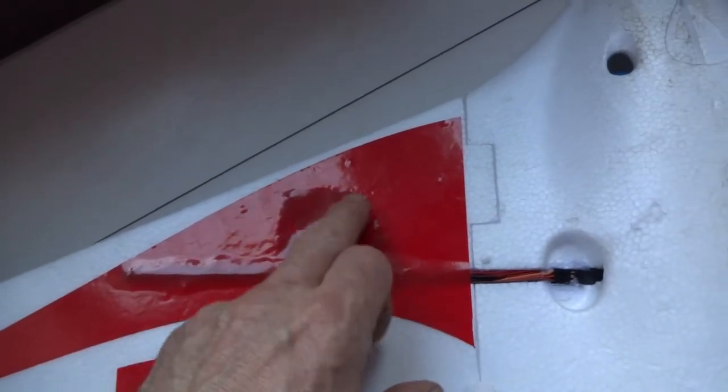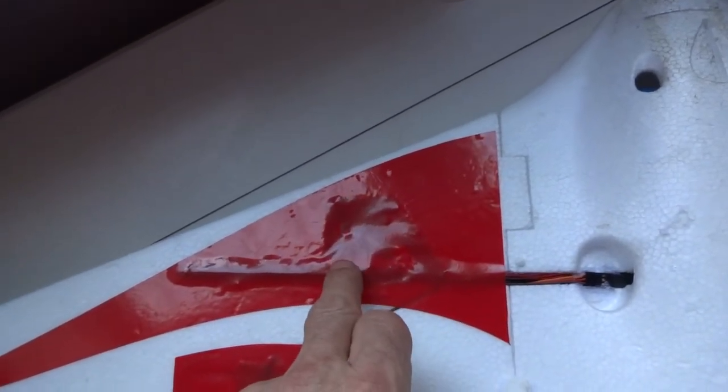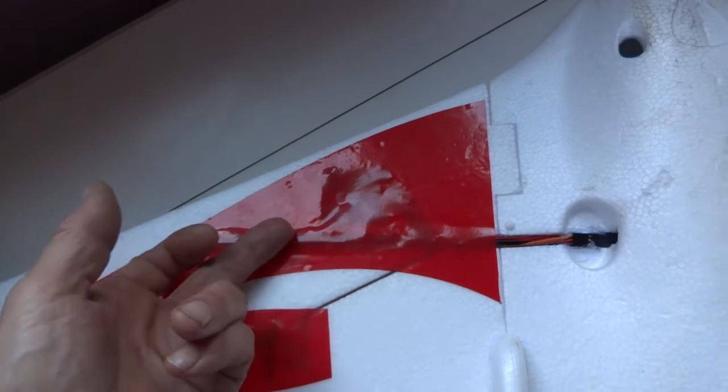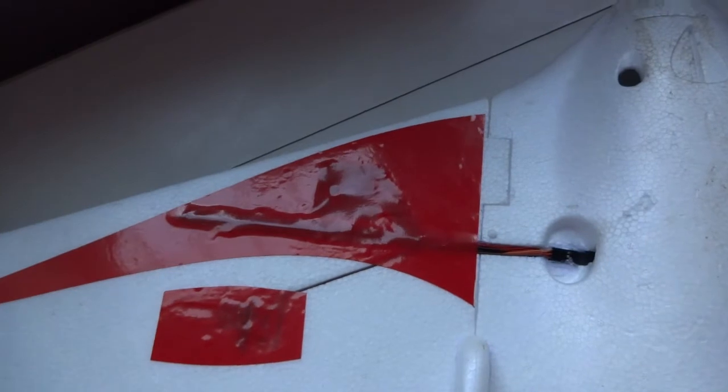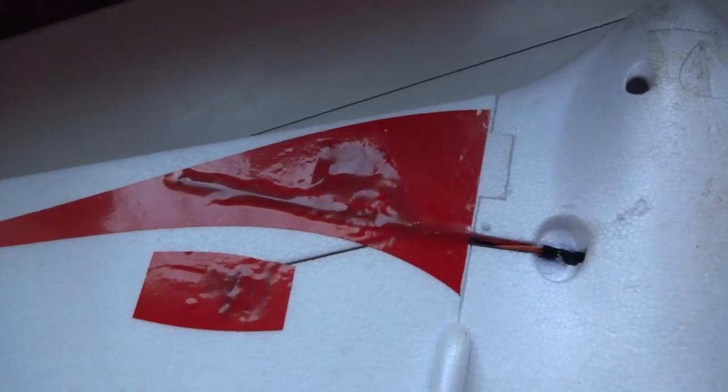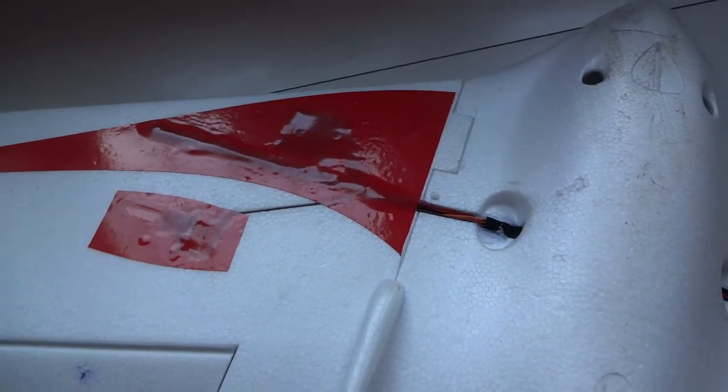The compass and GPS unit is embedded in the wing at that side. Obviously the antenna is facing upwards, and it receives the signals from the satellites through the foam, which doesn't seem to be a problem at all.